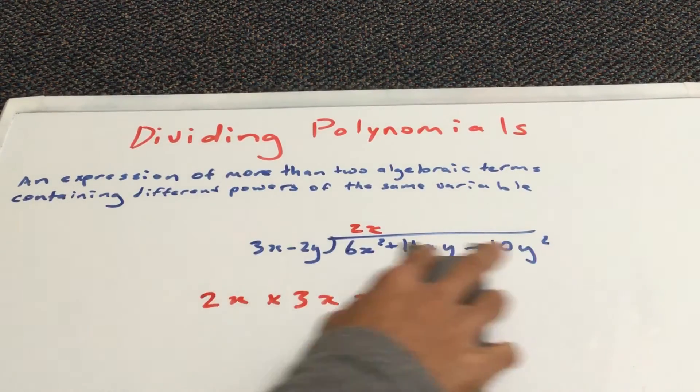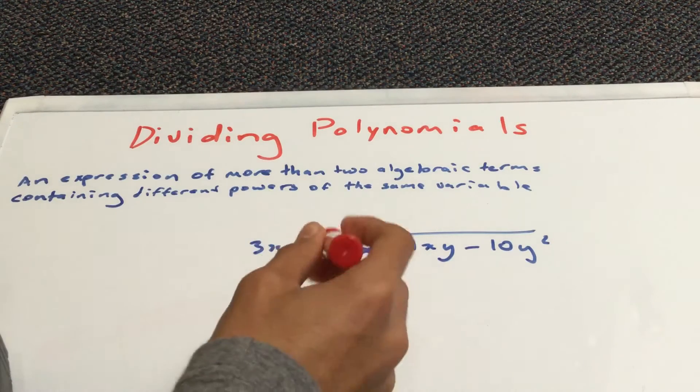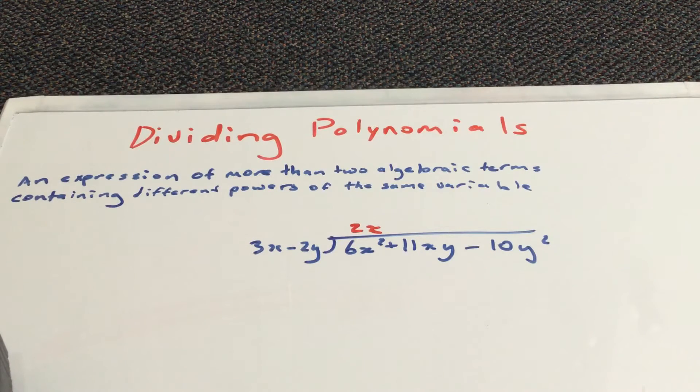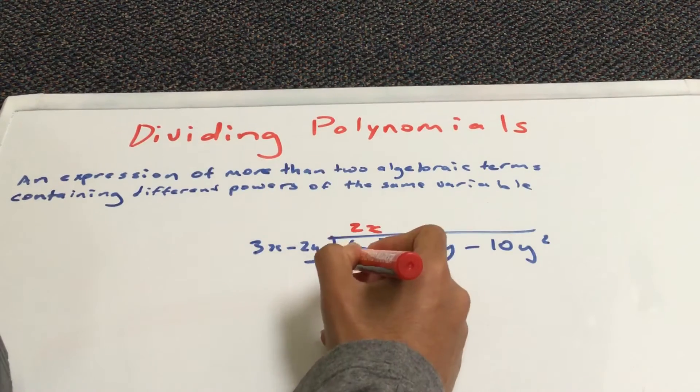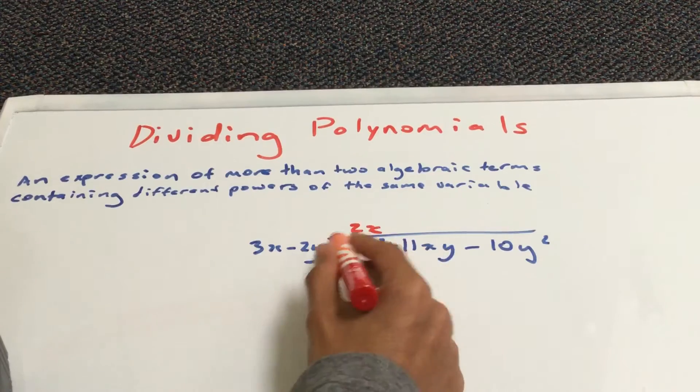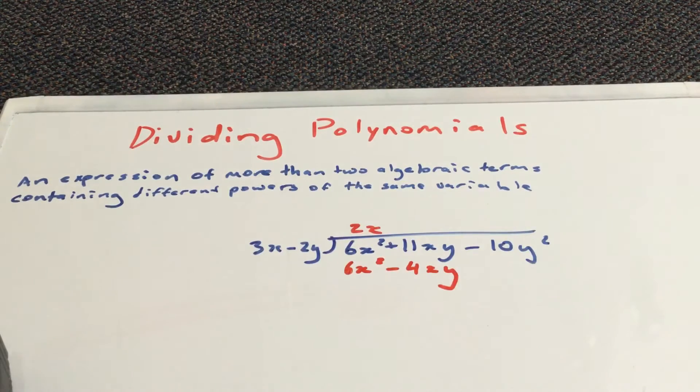So, 2x is correct. And now, you do 2x times by 3x minus 2y. And, you should get 6x squared subtracted by 4xy.